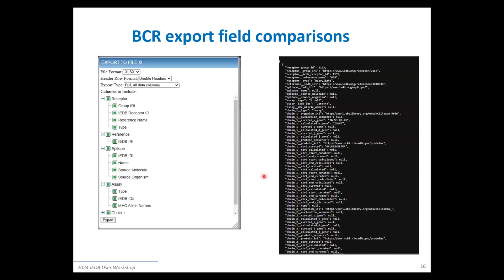Here's an example of a B cell receptor export. This shows the custom exports I went over on day one, with all the different fields available within the IEDB export. Here it is represented as API output. You can see all the fields match one-to-one — for example, the group IRI for receptors is available right there, and all available fields will be available within these export tables and endpoints.